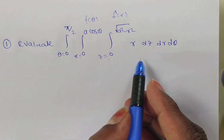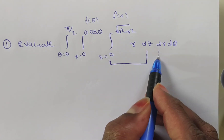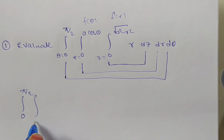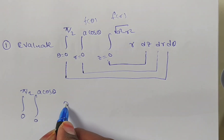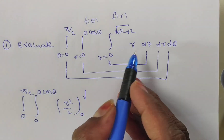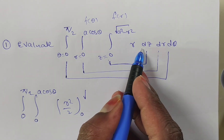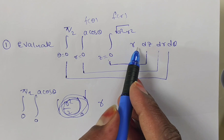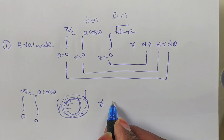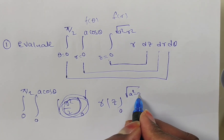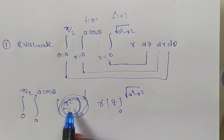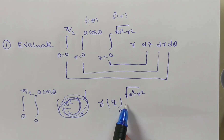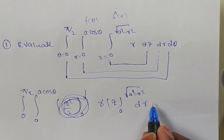Now we have to integrate. First, you observe it has dz, so first integrate with respect to z, then r, then theta. The limits for the outer integrals remain 0 to pi by 2 and 0 to a cos theta. Since we integrate with respect to z, r is treated as a constant. The integrand is r into 1, and integrating 1 with respect to z gives z. Substituting limits from 0 to square root of a square minus r square, we get r times square root of a square minus r square, times dr d theta.